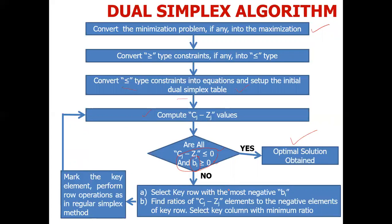We decide the pivot row, that is the leaving variable, based on the most negative right-hand side basic variable value.